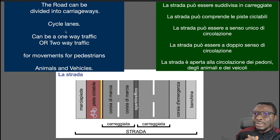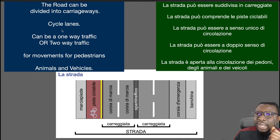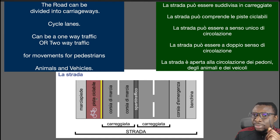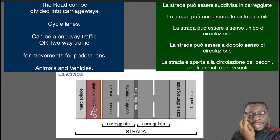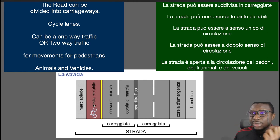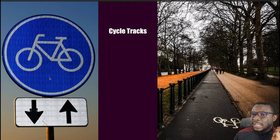We can also have the cycle lane, which in Italian is called 'la pista ciclabile'. 'La pista ciclabile' is the cycle lane where bicycles transit. In some cases pedestrians can transit there too, in other cases they cannot, but they are always indicated with a sign close to the main sign.